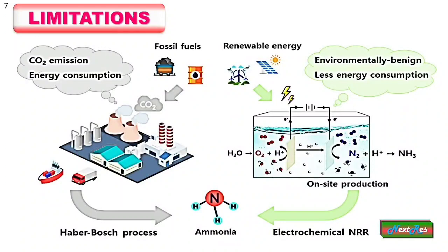Although having such advantages, NRR is not yet popular as the yield, which is measured from Faradaic efficiency, is very low. The yield of ammonia in an electrochemical cell is generally estimated from the indophenol blue method, or one can also use advanced NMR techniques. If the yield can be made higher, it is certain that this should in the future be industrially commercialized.